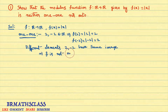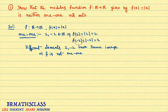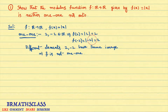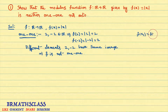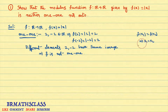So we conclude: f is not one-one. When the function is one-one, you cannot give such an example — you have to follow the regular procedure, which is: assume f(x1) = f(x2), then simplify to prove that x1 = x2, and thereby conclude that the function is one-one.